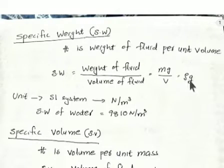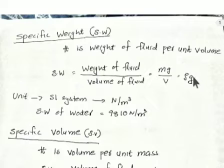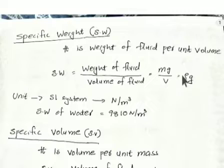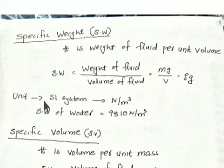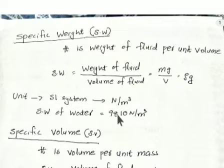Specific weight is not a constant value — it will vary depending on gravity and density. Gravity on Earth shows slight variation from place to place: at the pole, equatorial regions, and at the center. For a compressible fluid, density will vary with respect to temperature and pressure. The SI unit is Newton per meter cube.